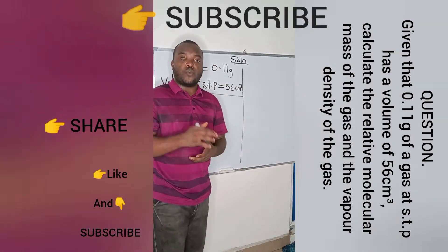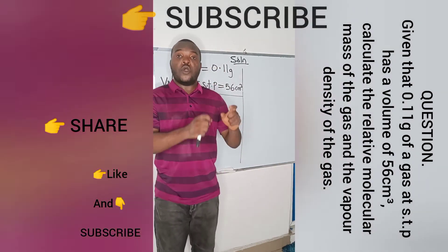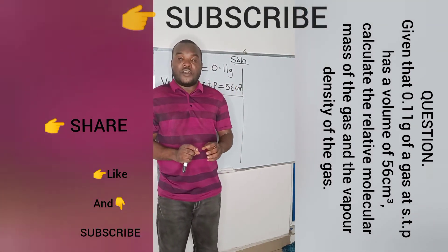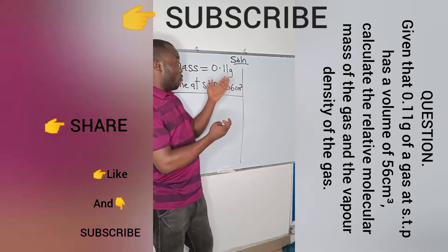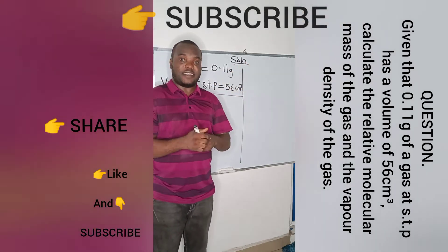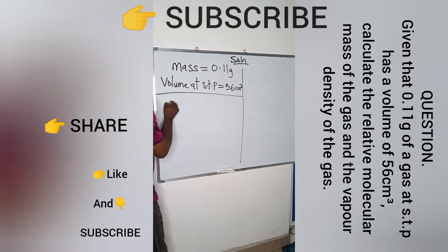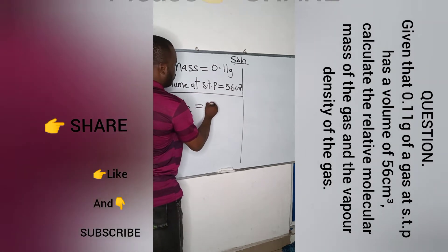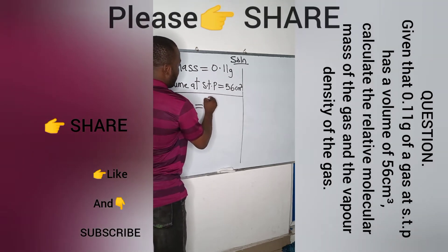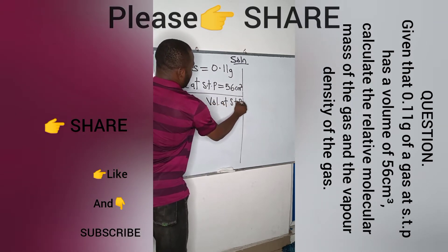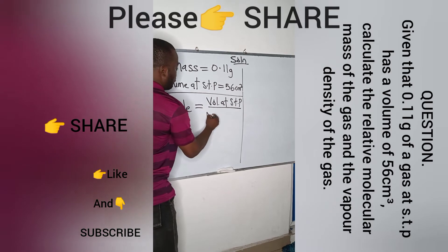How do we begin? We need to find the mole first. Remember that mole is equal to mass divided by molar mass. If we find the mole and we have mass, we can find the molar mass. Recall using volume at STP, mole of a gas is equal to volume at STP divided by the molar volume of a gas.